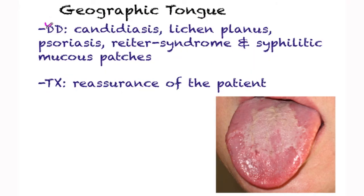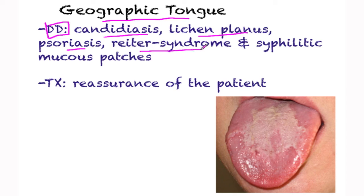The differential diagnosis of geographic tongue includes candidiasis, lichen planus, psoriasis, Reiter syndrome, and syphilitic mucus patches. Its therapy is reassurance of the patient.